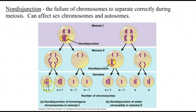If one of these gametes combines with a normal gamete, you end up with a condition known as a trisomy — tri meaning three, soma meaning body, so three bodies. If one of these ends up fertilizing a regular normal gamete then you end up with a monosomy, in which case the organism is actually missing one of the chromosomes. Both these conditions are actually not so good.